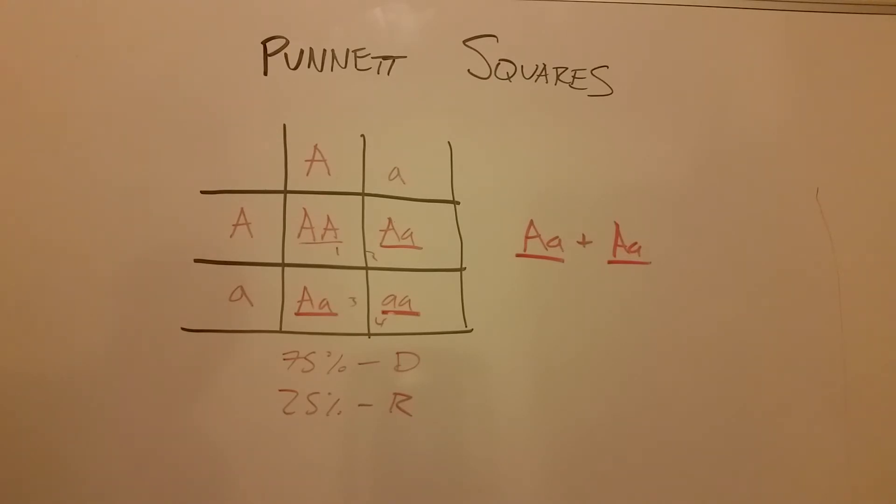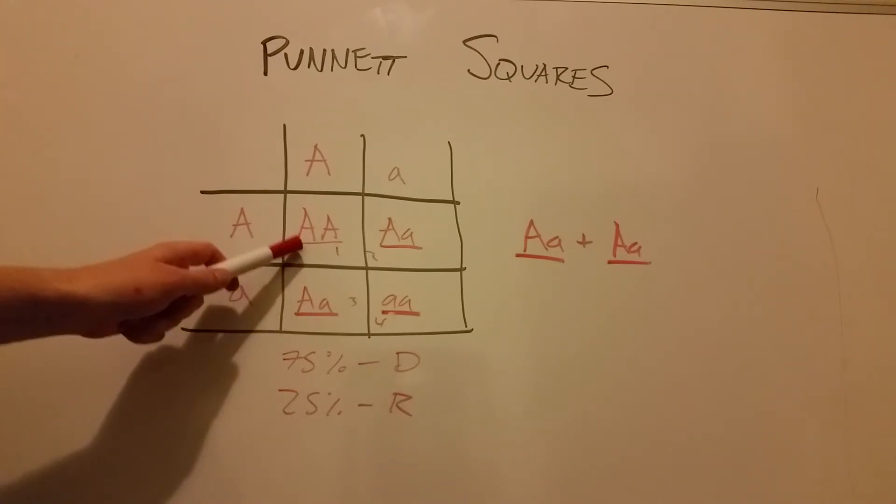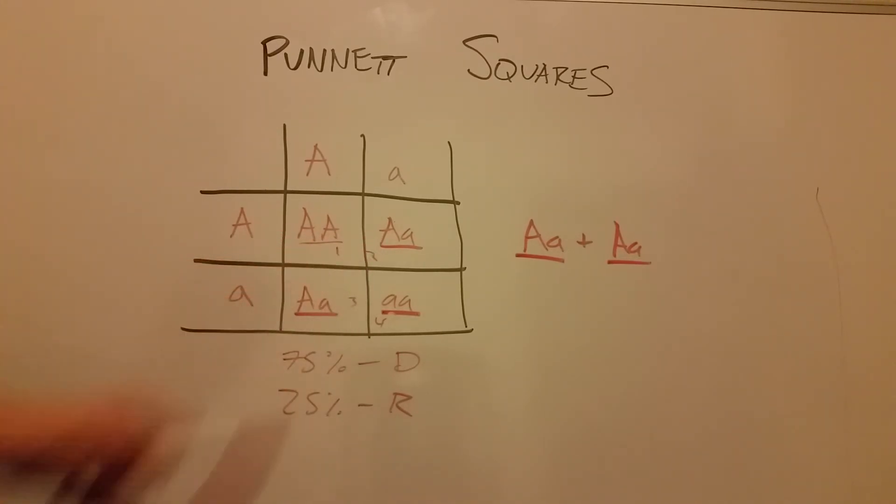So it might be a case that they have three children and those three children could be one, two, and three, and none of those three children are showing cystic fibrosis. When they have the fourth, it could. Probably would say that it would. Now, obviously, it doesn't always work like that in real life, but that's an example of a Punnett square.